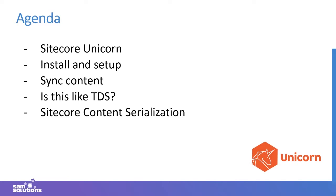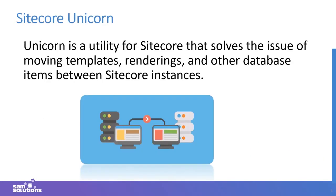Unicorn is a utility for Sitecore that solves the issue of moving templates, renderings, and other database items between Sitecore instances. In other words, this is a way of automatically serializing Sitecore content into files so that developers can store them as part of the source code.